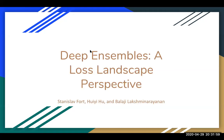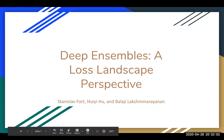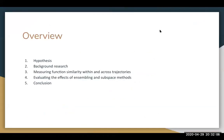This paper is called Deep Ensembles: A Lost Landscape Perspective. The overview of what I'll go over is basically what the paper was trying to do, its hypothesis, and the empirical research that they did to show it. Then I'll talk about the background research referenced, how they measure function similarity within and across trajectories, the evaluation of ensembling and subspace methods, and then the conclusion.